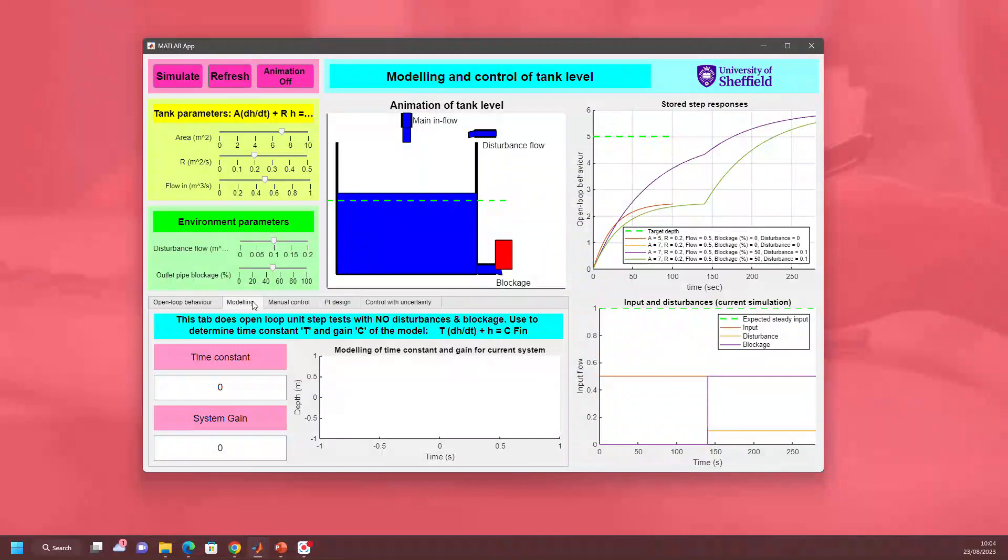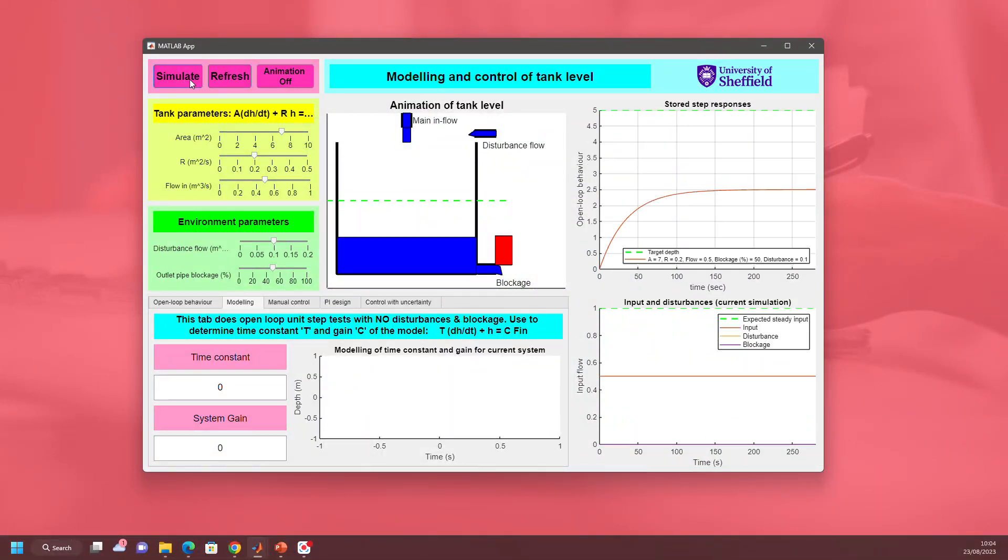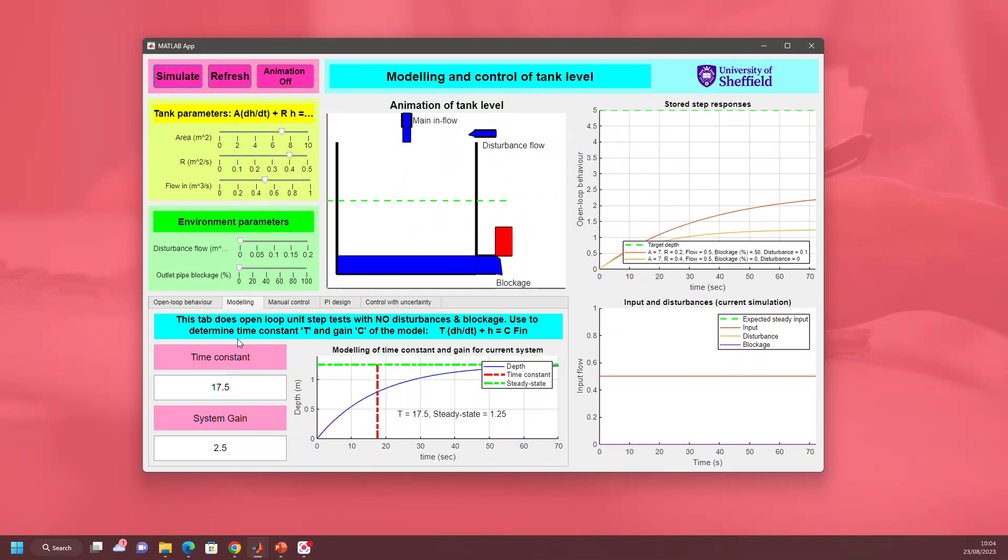Once you've done that, we move to modeling. Simulate, and here we're doing time constant and gain modeling. You can see the behavior and this graph shows you how to get the time constant and the gain, and how that might vary as you change the parameters. The values change as you change the tank parameters. Once you're happy and you've done your modeling, you say this is the system I'm going to work with.